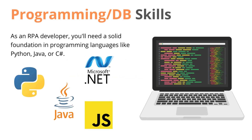The first skill is programming and database skills. As an RPA developer, you need a solid foundation in programming languages like Python, Java, C#, and JavaScript. You don't need to be an expert in all of these, but your basic concepts should be clear — for example, what is object-oriented programming, and how to accomplish certain things in C# or VB. These languages will help you interact with the automated solutions you create.